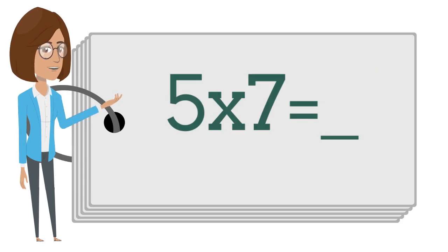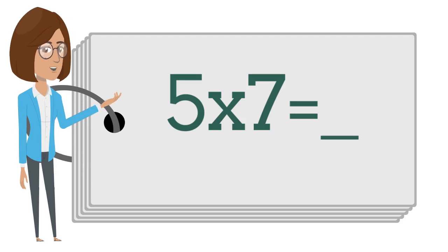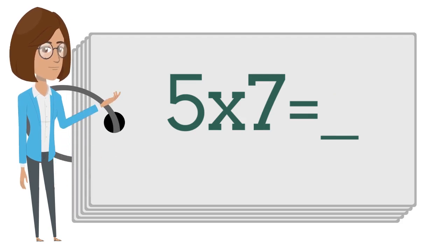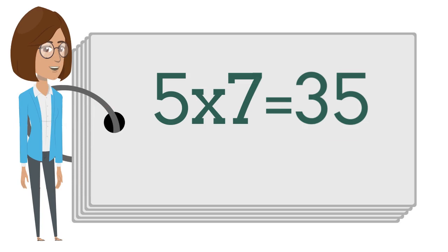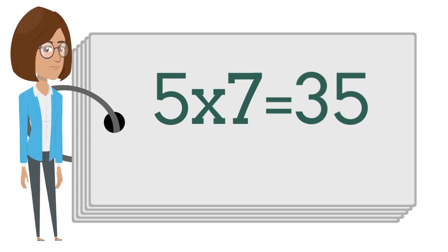Five times seven is? Say the answer out loud. Five times seven is thirty-five.